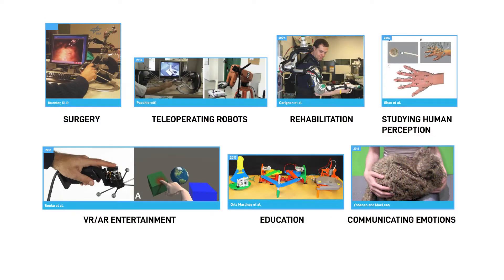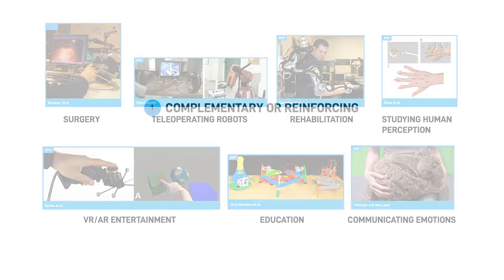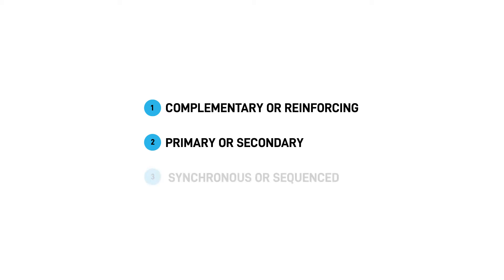A wide range of user applications can benefit from the addition of touch feedback. McLean and colleagues described the roles that haptics can play in a multisensory application according to three parameters. A haptic signal can be complementary or reinforcing, it can be primary or secondary, and it can be synchronous or sequenced in relation to other modalities.